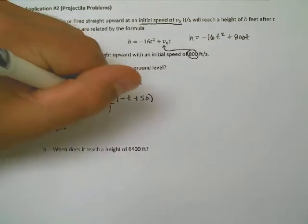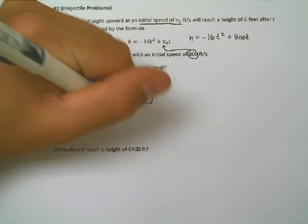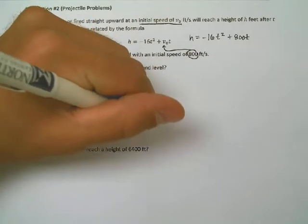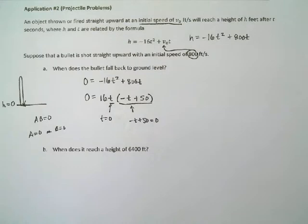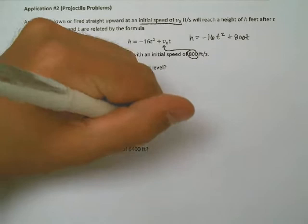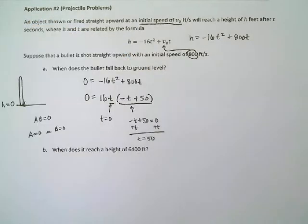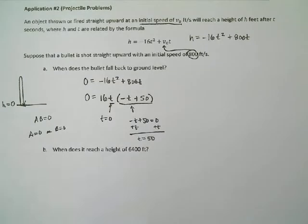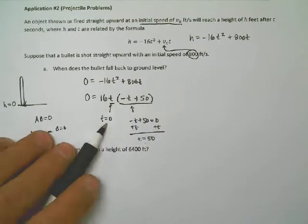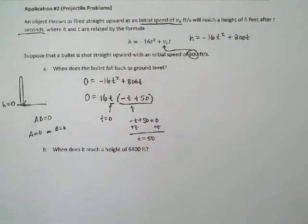Solving for t here, I can add t to both sides. And that means that t is equal to 50. So either no time has passed or 50 seconds have passed. Why seconds? Because it says t seconds up here in the description. So here would be the zero when you initially shoot it. It goes up for 25. It comes back down for 25. 50 seconds has gone by.